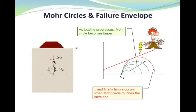In this slide, you can see that with increasing the delta sigma, or deviatoric stress, Mohr circle becomes larger, until it touches the failure envelope. And the sample fails at exactly this point.